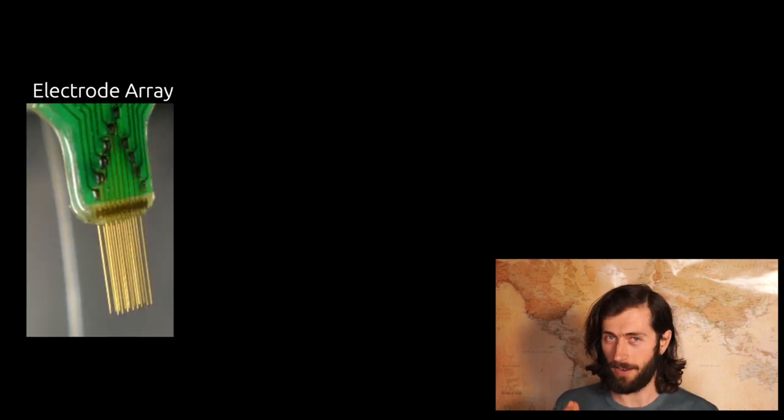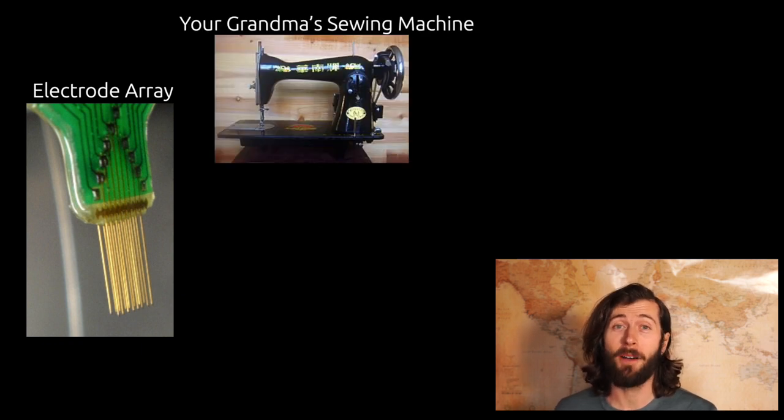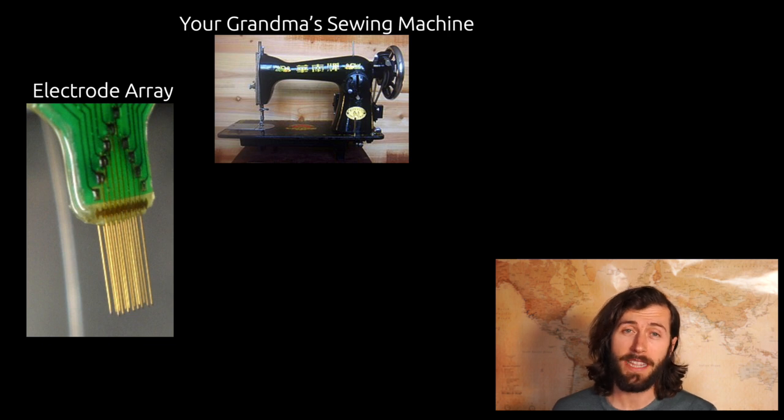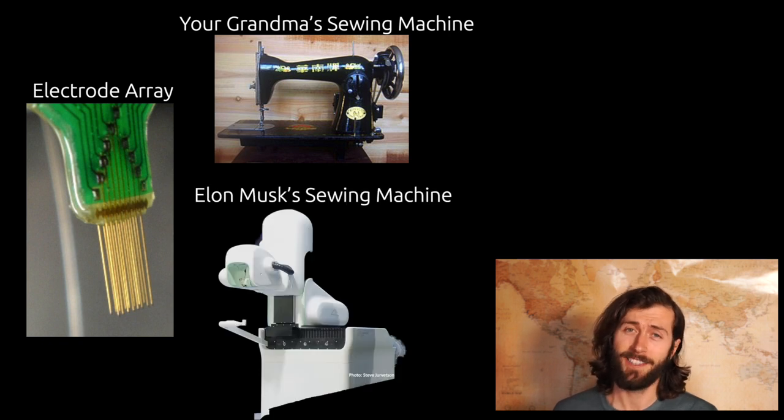The typical electrode array that is being used today involves a series of straight pins. These are not very flexible, and there are not many electrodes in these arrays. What Neuralink has built is a system which not only has a magnitude more of electrodes, but they're flexible and they're put in by some sort of sewing machine. I'm not talking about your grandma sewing machine. I'm talking about a multi-million dollar piece of technology that uses computer vision to navigate around blood cells to reduce bleeding and the risk of infection upon implantation. This is Elon Musk's sewing machine.